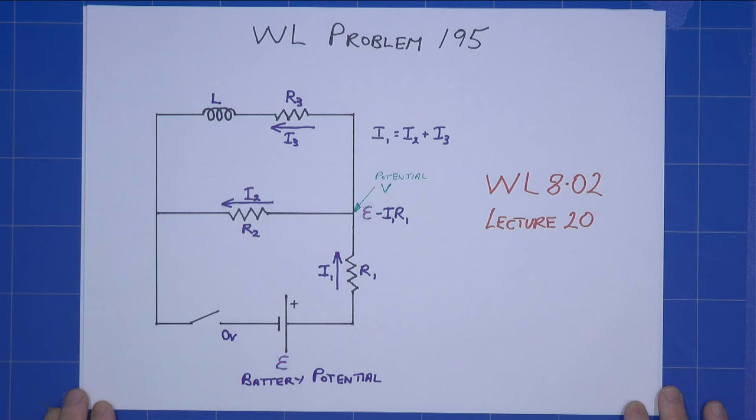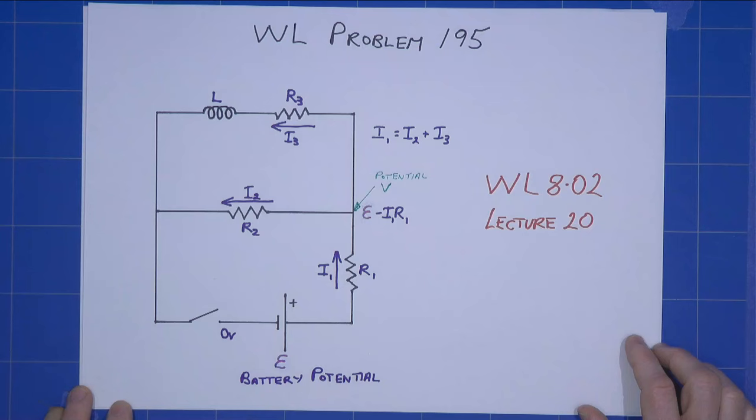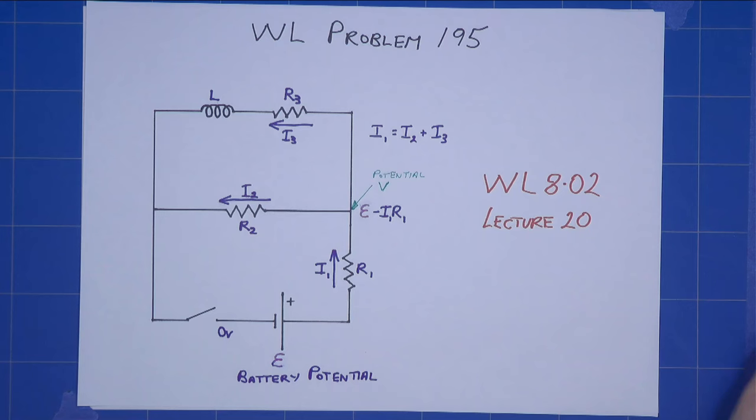This is Keith's solution to Walter Lewin's problem 195, and I do suggest that you watch his lecture 20 of 802, where you can learn all about this kind of thing with an inductor and how the current varies.